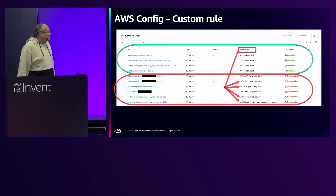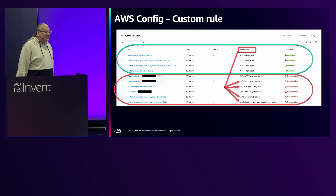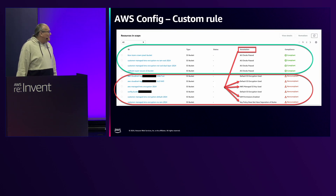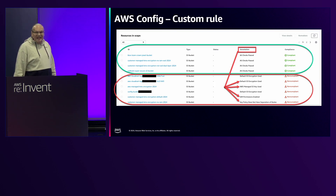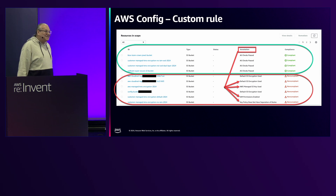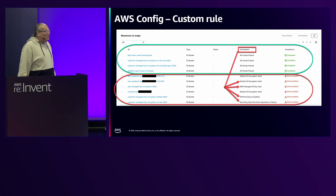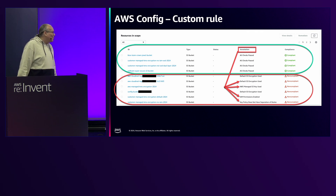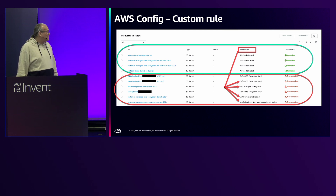When this rule runs, if all checks pass it marks the bucket as compliant. If it's non-compliant, it adds an annotation telling you why — for example, IAM permissions enabled, or key policy doesn't have separation of duties.